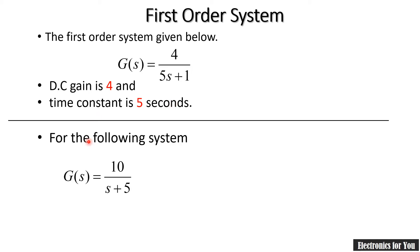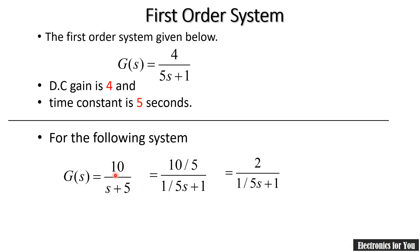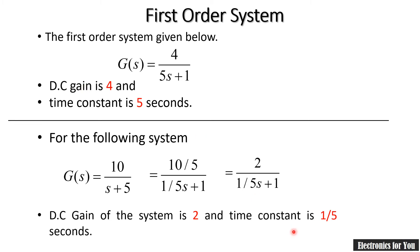Consider another system where G(s) is 10 divided by 5s plus 1. We must express the system in the form Ts+1, so divide numerator and denominator by 5. After solving, we get G(s) equals 2 over (1/5)s plus 1, where 2 is the DC gain and 1/5 is the time constant.